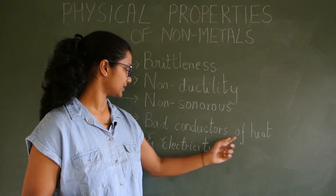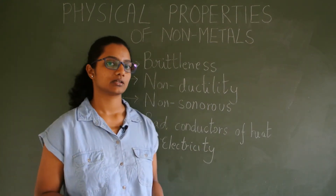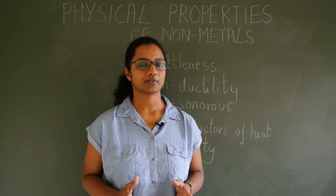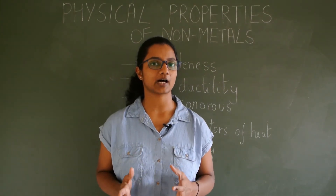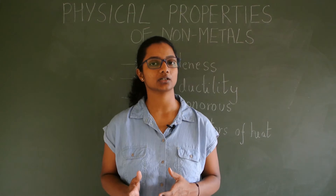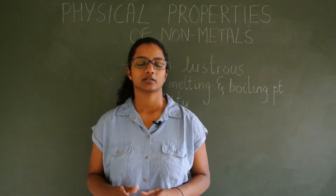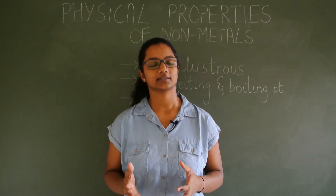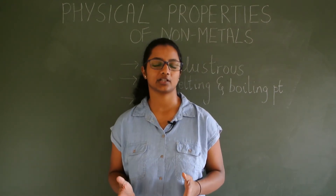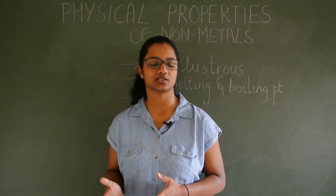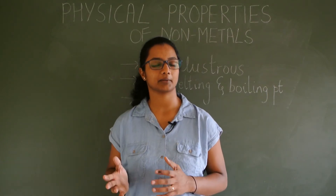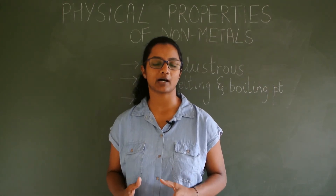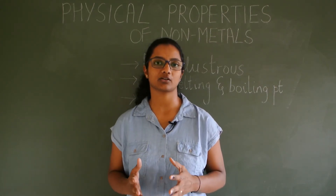Non-metals are bad conductors of heat and electricity. It is only graphite, which is a form of carbon, that is a good conductor of heat and electricity. Non-metals are normally in powder or gaseous form and cannot be polished — they don't have a typical luster or shine unlike metals. The only exception is diamond, which is a form of carbon; it has luster and a lot of shine.